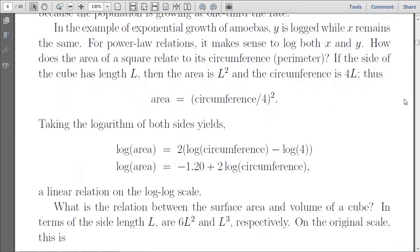Let's look at another example. For power law relationships, sometimes it makes sense to log both x and y. So for example, how does the area of a square relate to its circumference or perimeter of the square? So if the side of a cube has length l, then the area is the length squared, and the circumference is 4 times l. Thus, the area is, so circumference divided by 4 is the length of one side, and it's that squared which equals the area. So this whole bit right here, circumference divided by 4, is l. L squared is the area.